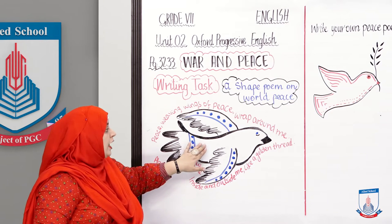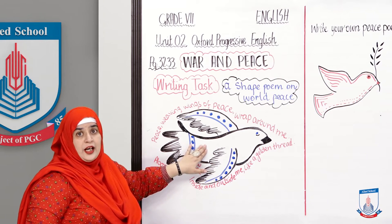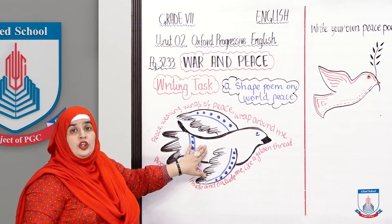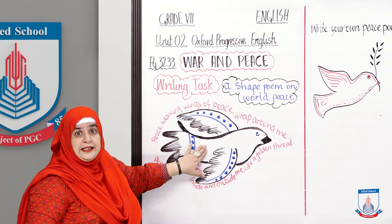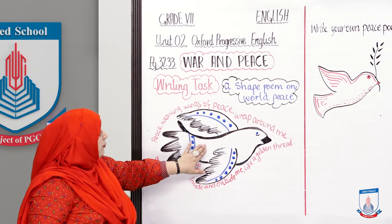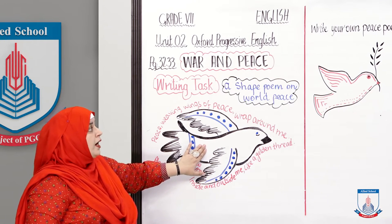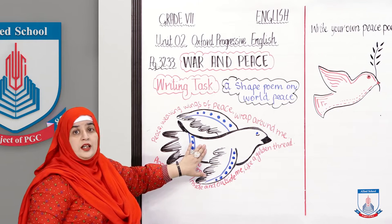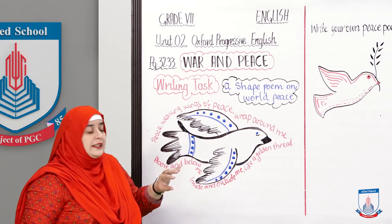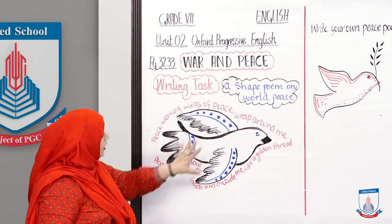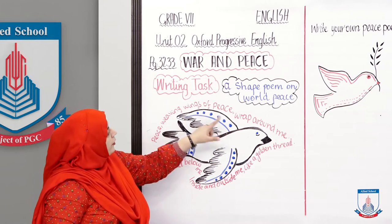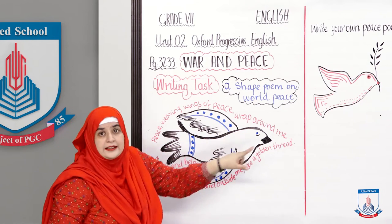Jahan bhi dikhai jaye a white dove, it's the representation of peace. Toh hum karenge ek shape poem about world peace. Yeh shape poem is tarah se hai — dekho yeh bird bani bhi hai, aur iske around poori poem likhi bhi hai.